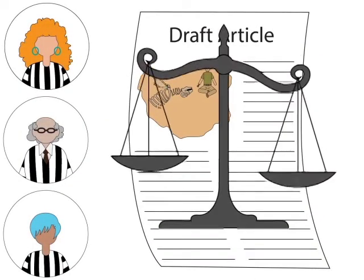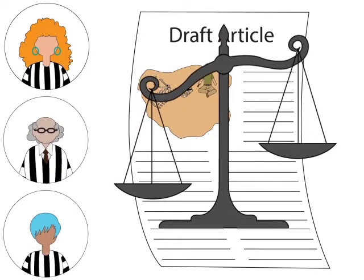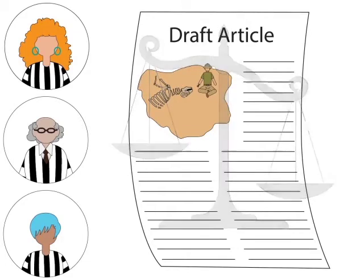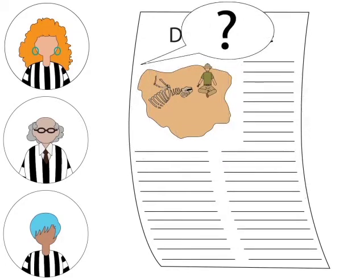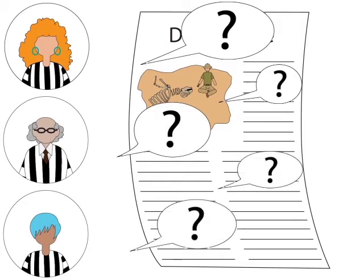Each reviewer evaluates the article by asking questions to judge the quality and significance of the research. Questions like: what is this research about? Is it interesting? Is it important? Is the methodology sound? Are the conclusions logical? And are the findings original?